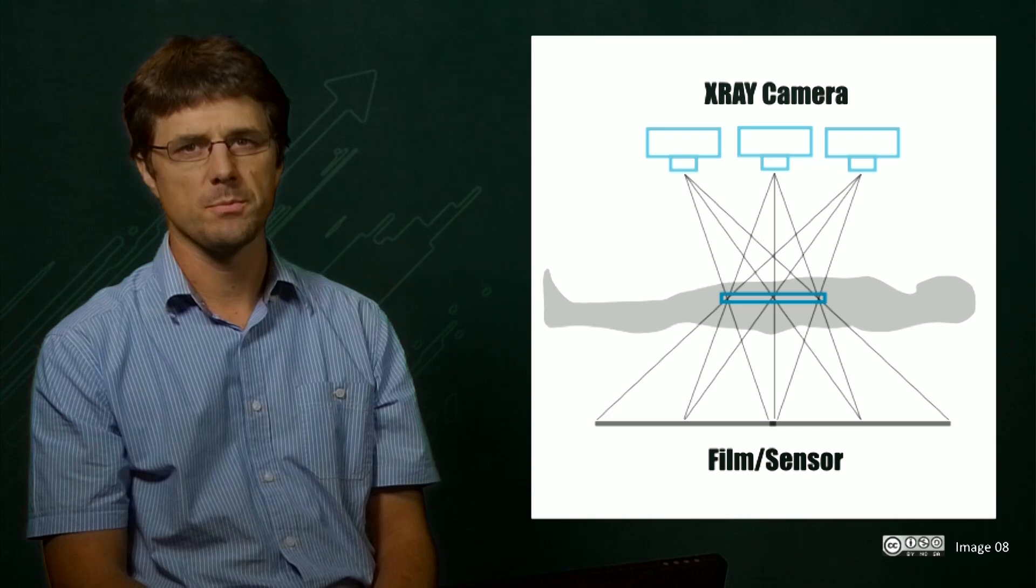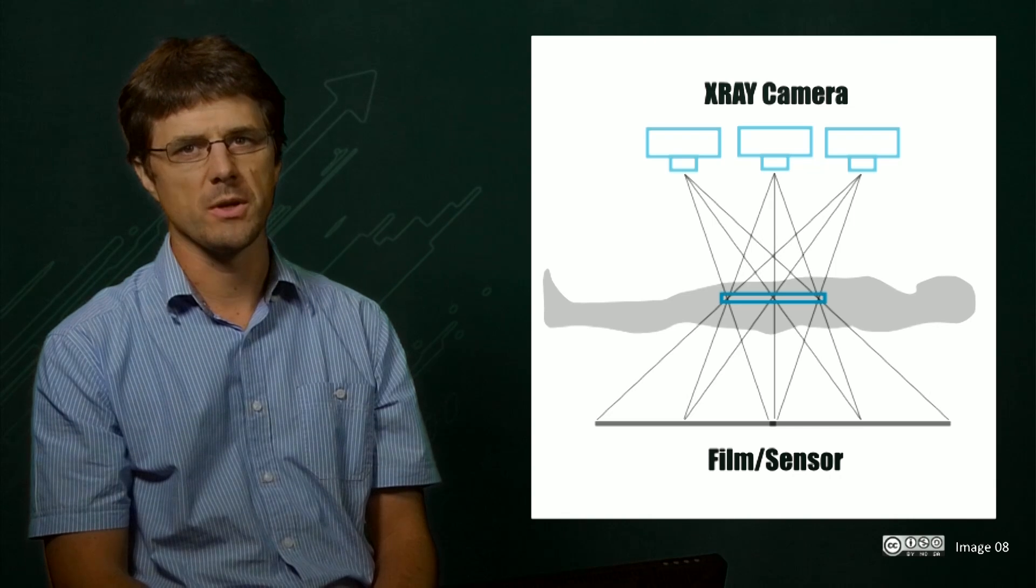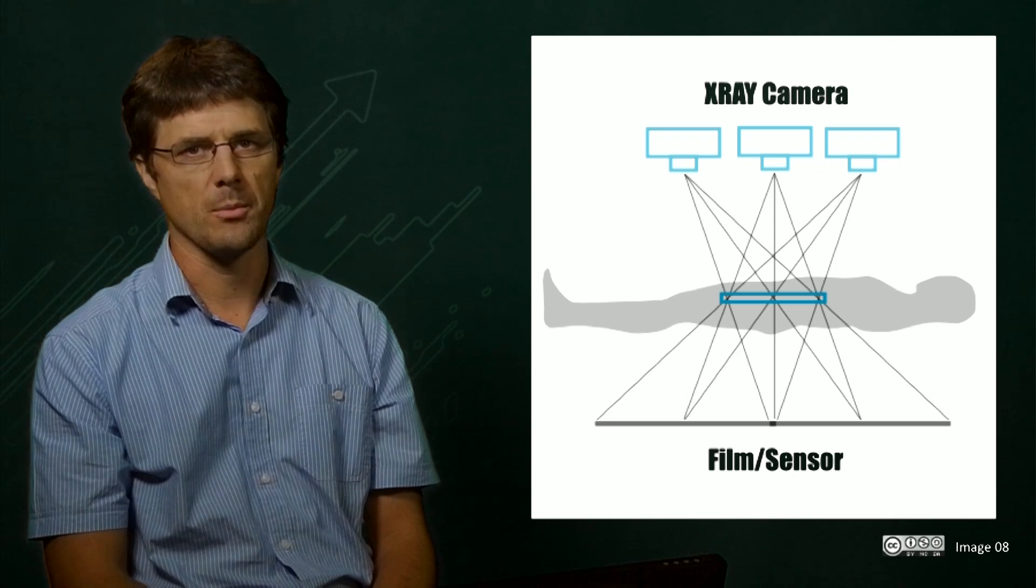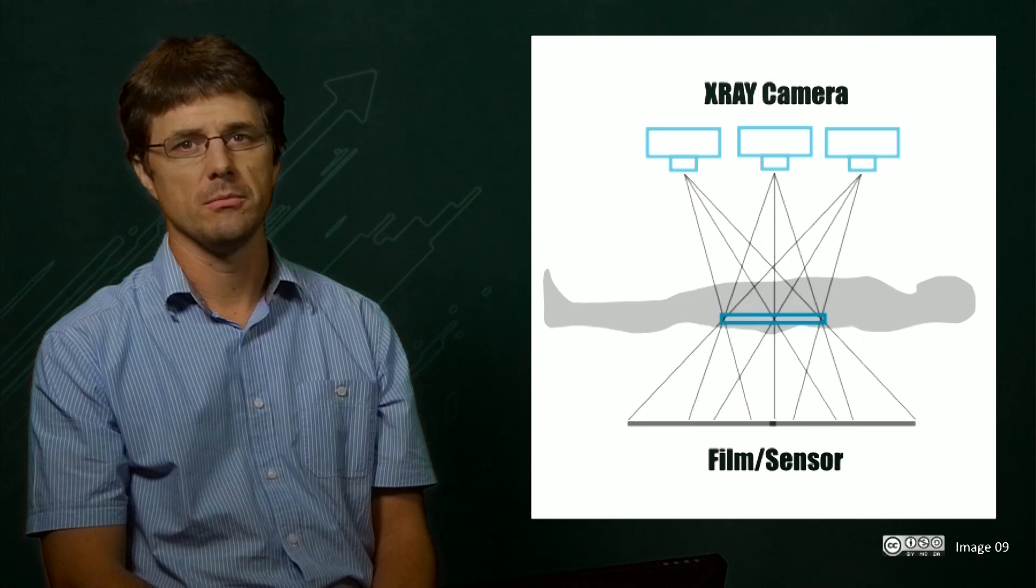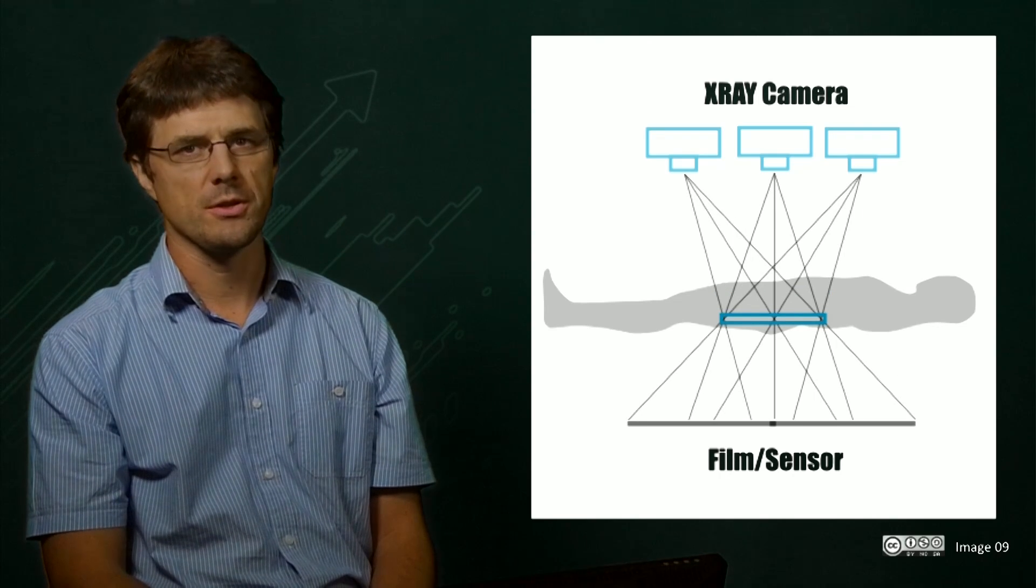In order to select which plane we image, we can vary the speed of the film movement with respect to the camera. If we reduce the speed of the film, the imaging plane will shift closer to the film.